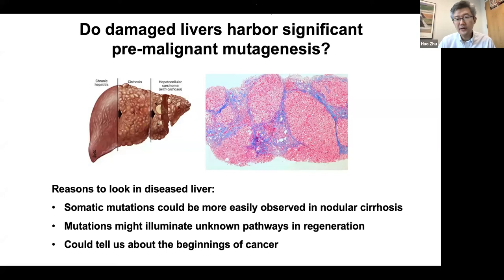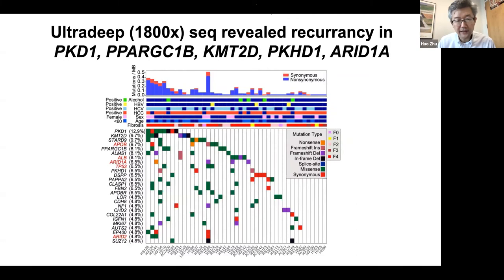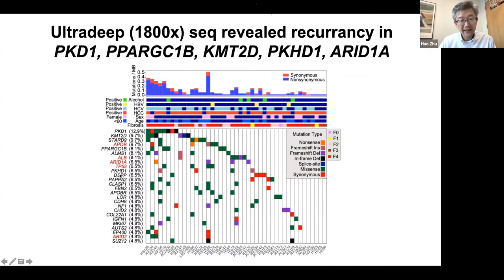This is published a couple of years ago. We used exome and ultra-deep sequencing to evaluate about 150 genes in 40 to 60 patients. We found a number of recurrent mutations in genes found in HCC, but also mutations not commonly associated with cancer — namely PKD1, PKHD1, and PPARGC1 beta. A variety of genes that appear to have something to do with cancer, and some that may not.